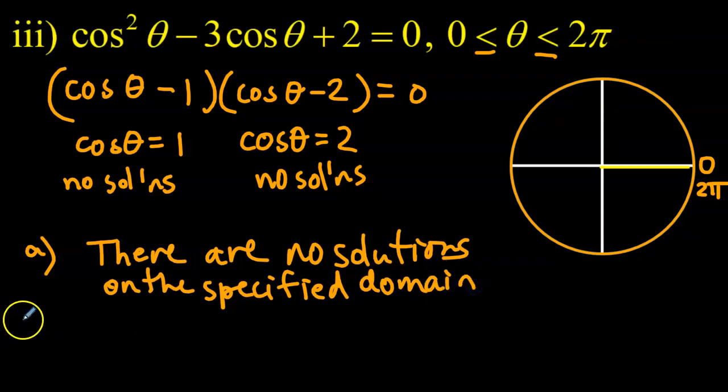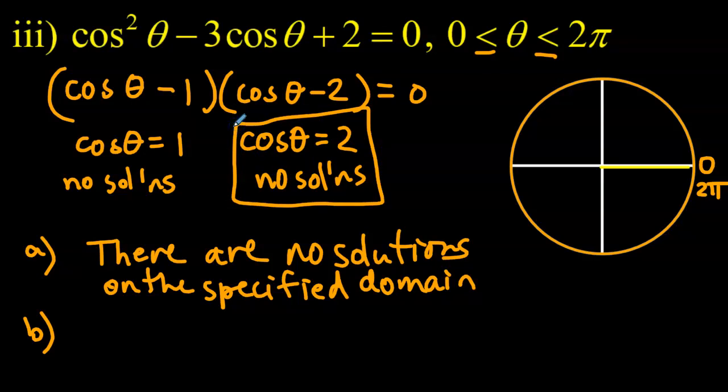But what about the general solution? Now the general solution, yes, we're not limited by this particular domain. So we're still not going to get any solutions from here. Because no matter if you limit or don't limit the domain, you just never will be able to get cosθ to be equal to 2. But cosθ will be equal to 1. Right? So for example, it's 0, 2π, 4π, 6π. Right? Every full rotation from 0. Right? Every hour on the hour, so to speak.